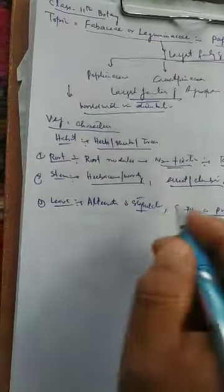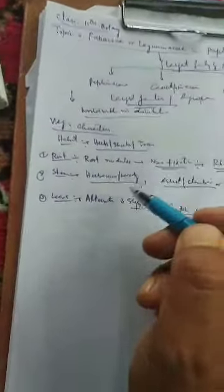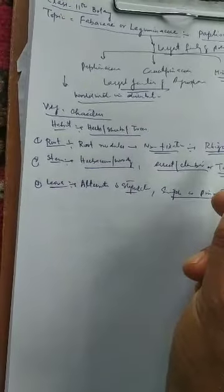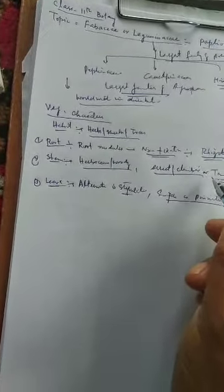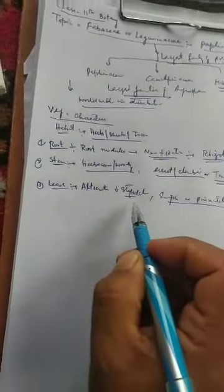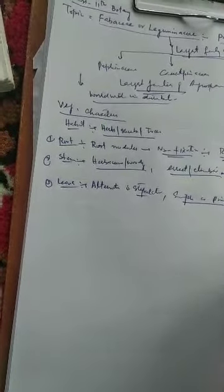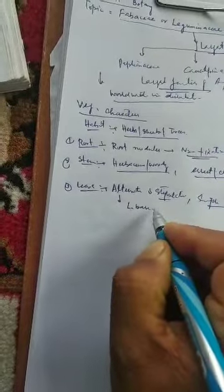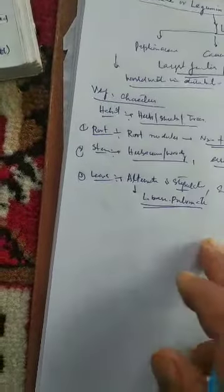To summarize the vegetative characters: habit — represented by herbs, shrubs, and trees; distribution — cosmopolitan; root — characterized by root nodules helping in nitrogen fixation with Rhizobium bacteria; stem — herbaceous or woody, erect or climber or tendrillar, branched cylindrical and angular; leaves — alternate and stipulate, simple or pinnately compound, reticulate venation. One more important feature is that the leaf base is pulvinate — a characteristic feature of this family.